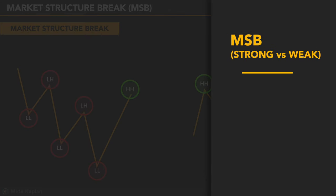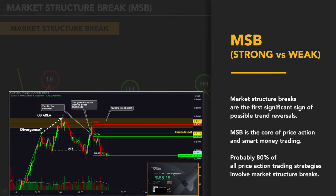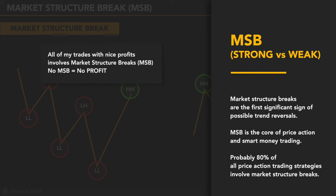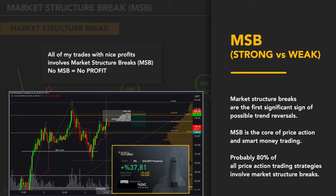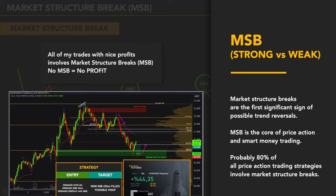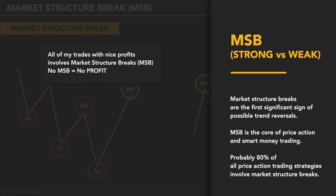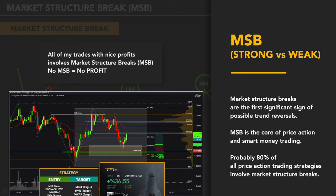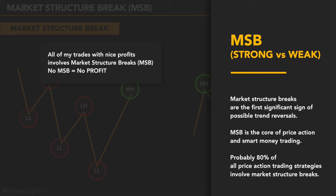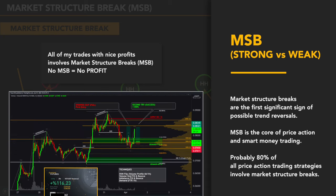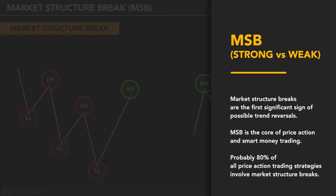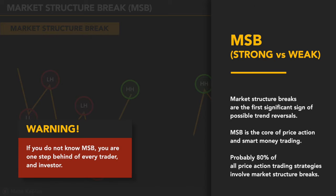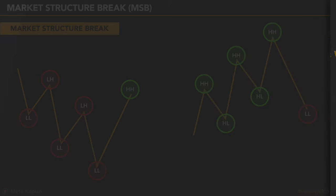Step 1: Strong and weak market structure breaks. Market structure breaks are the first significant sign of possible trend reversals. MSB is the core of price action and smart money trading. Probably 80% of all price action trading strategies involve market structure breaks. It does not matter if you are scalping 1-minute charts, day or swing trading, or even investing — if you do not know MSB, you are one step behind every trader and investor.